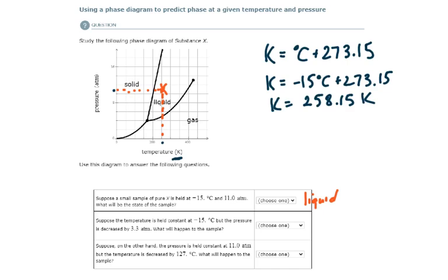Suppose the temperature is held constant at negative 15 degrees, which is 258 Kelvin, but the pressure is decreased by 3.3 atm. So it's decreased from 11 to about 8. We go from here to somewhere about here. Guess what? Still liquid.